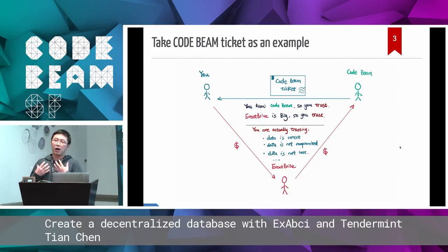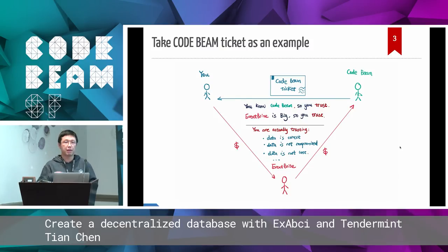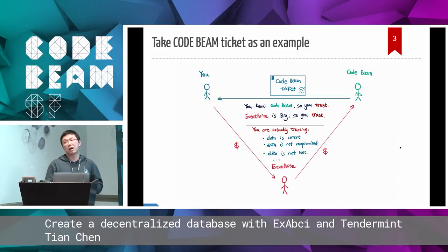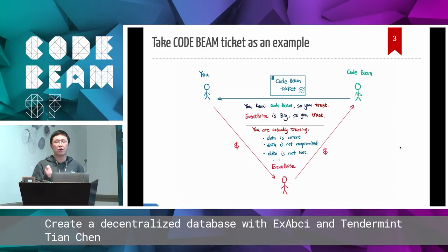Behind the scenes, we are actually trusting: one, that the data is correct — we paid money and the database in Eventbrite records that fact; two, that the data is not compromised — I bought a ticket and it won't be written as someone else bought it; and three, that the data is not lost — no server crash, no data loss — so I can use this ticket as a digital asset to verify that I own it.